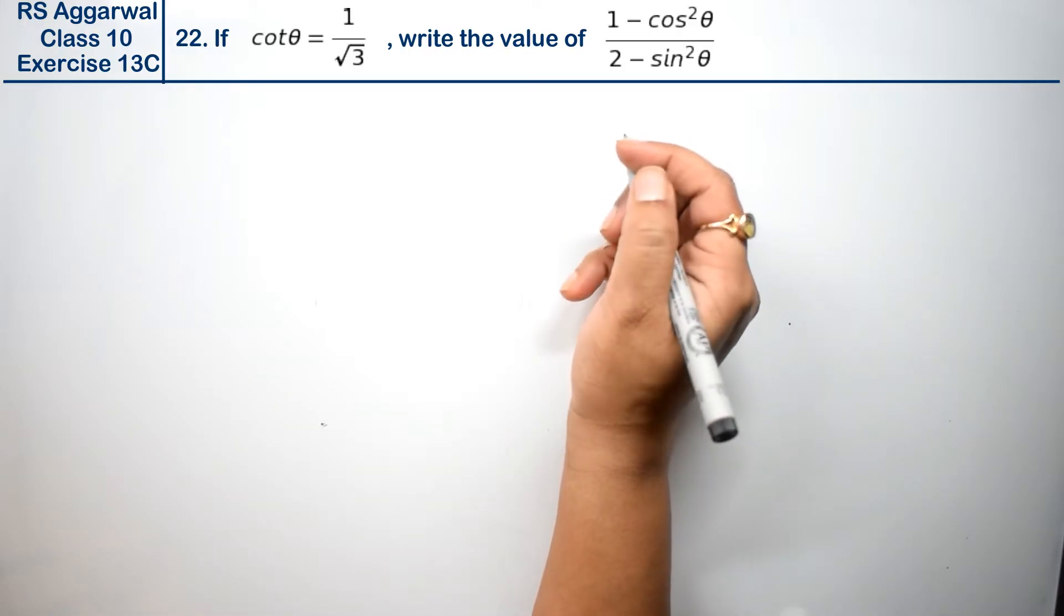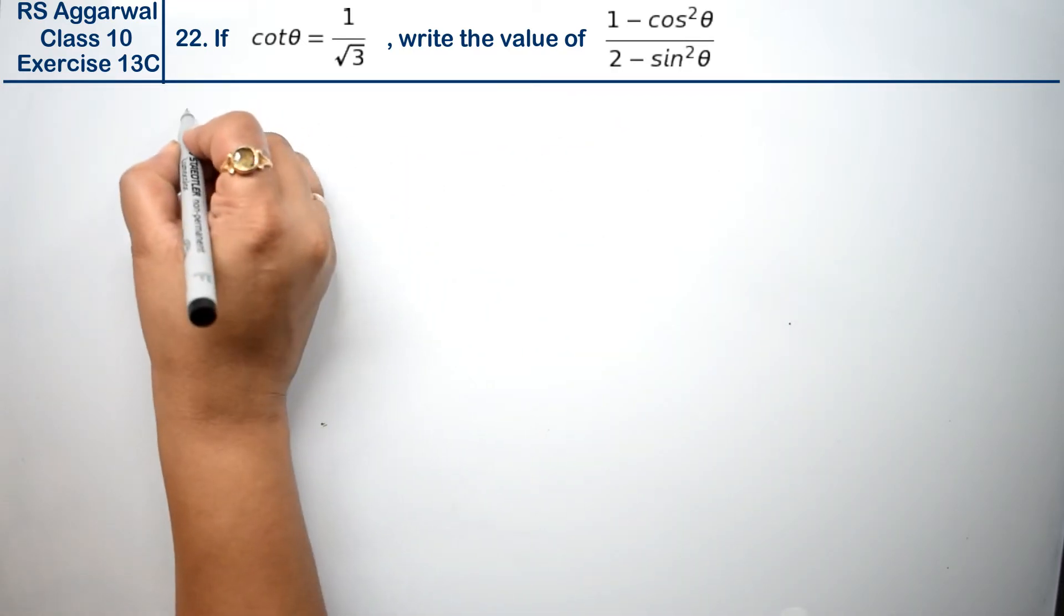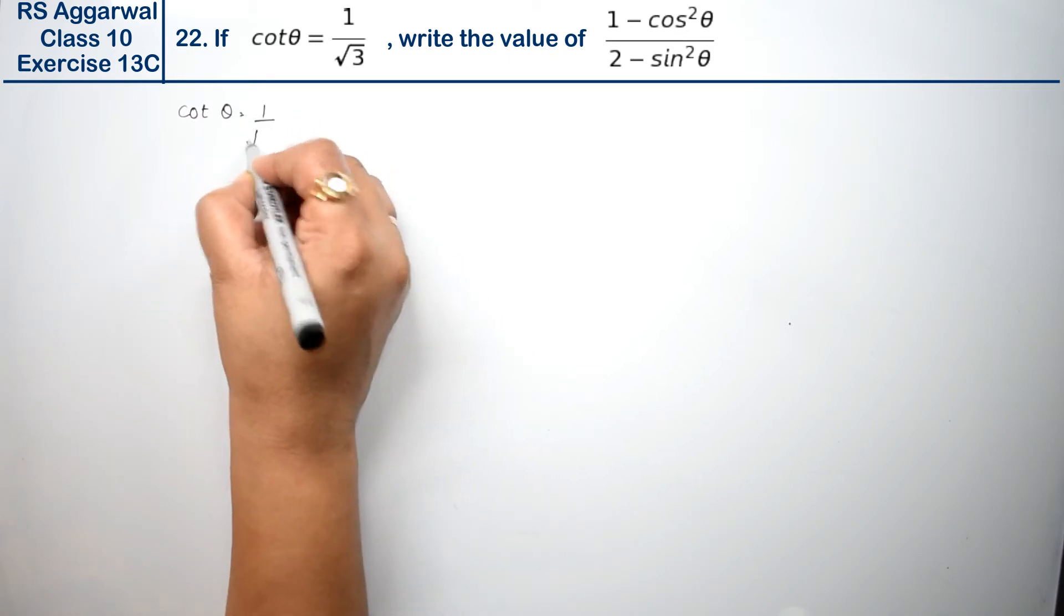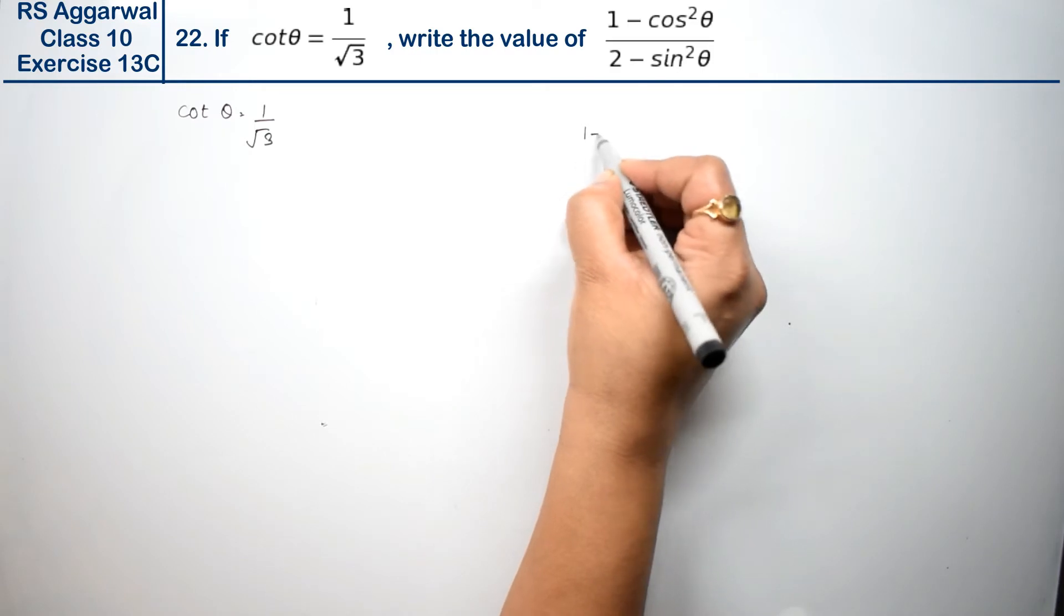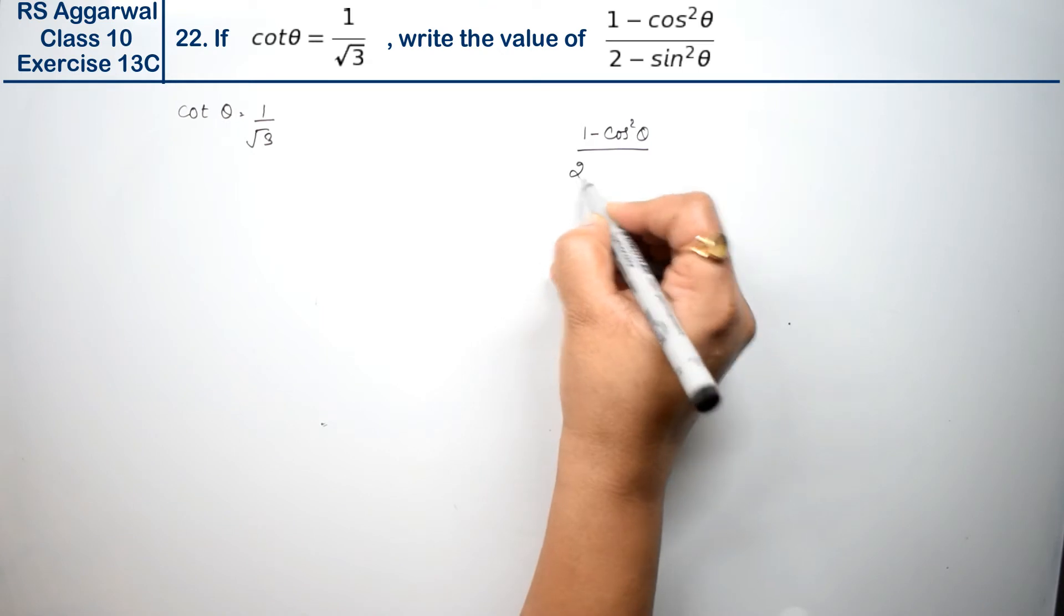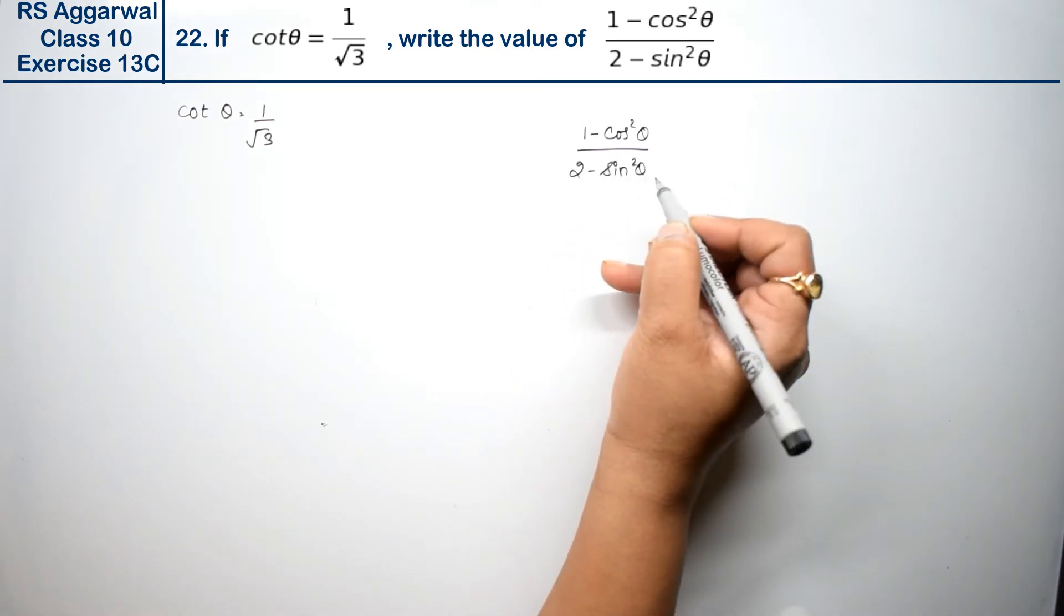Let's do question number 22 of exercise 13C on trigonometric identities. If cot θ = 1/√3, write the value of (1 - cos²θ)/(2 - sin²θ). So how will we solve it?